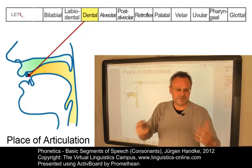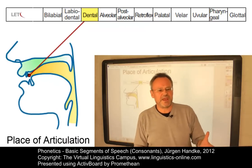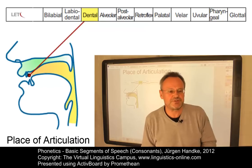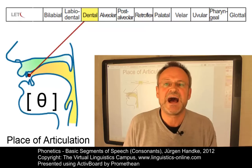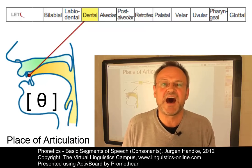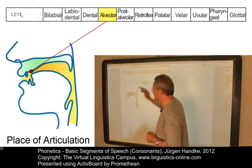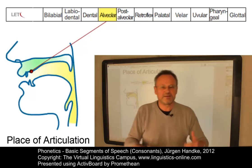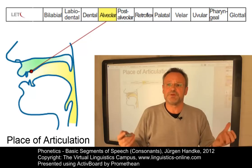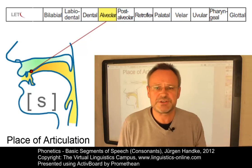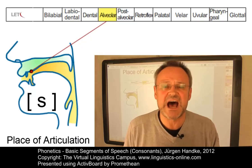The dental place of articulation — from Latin 'dents, dentis', meaning tooth — involves a constriction between the tongue and the upper teeth, producing a consonant like 'a-θa'. The alveolar place of articulation involves a constriction between the tongue and the alveolar ridge, producing a consonant like 'a-sa'.